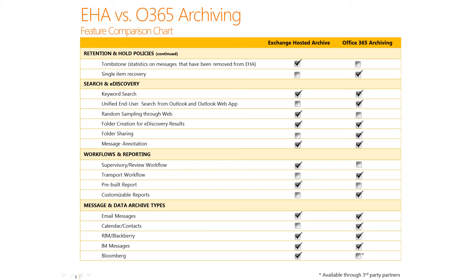Office 365 also has a tool that will allow a compliance officer to do random sampling. This tool is desktop-based as opposed to website-based. From a workflow and reporting capability, in Office 365 there are supervisory and review capabilities that are built into our transport engine. In Exchange Hosted Archive, the review functionality is built directly into the EHA management interface. Similarly, Office 365 has very granular reporting. It allows an organization to choose which metrics they want to report upon and create reports to meet their business needs.